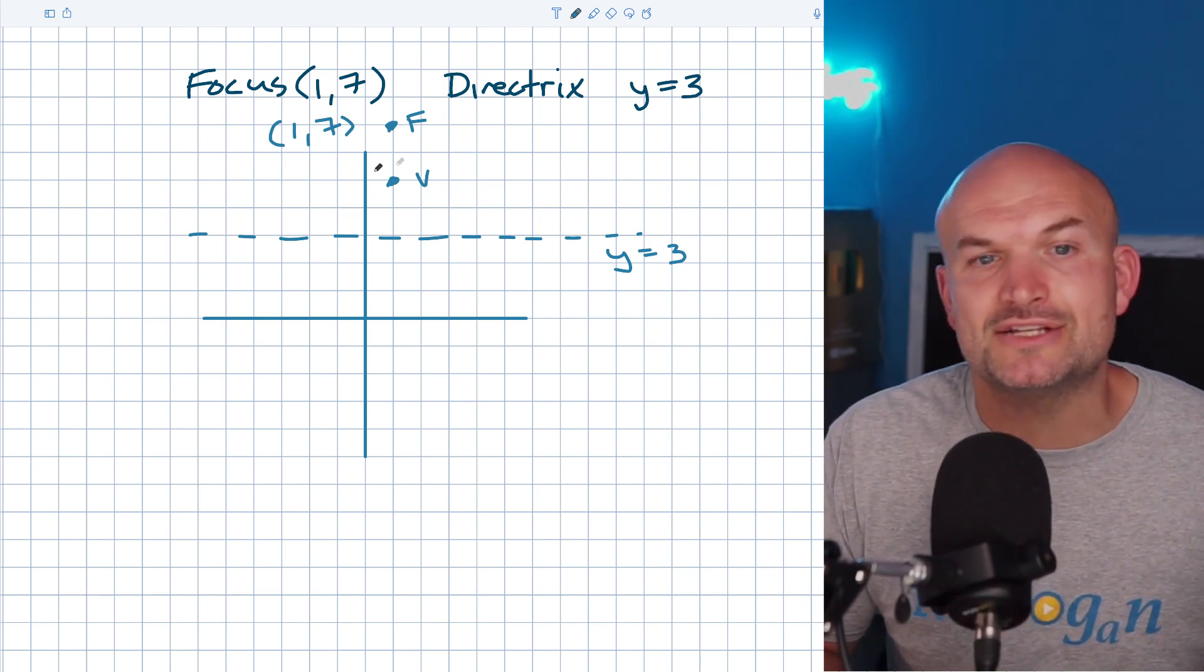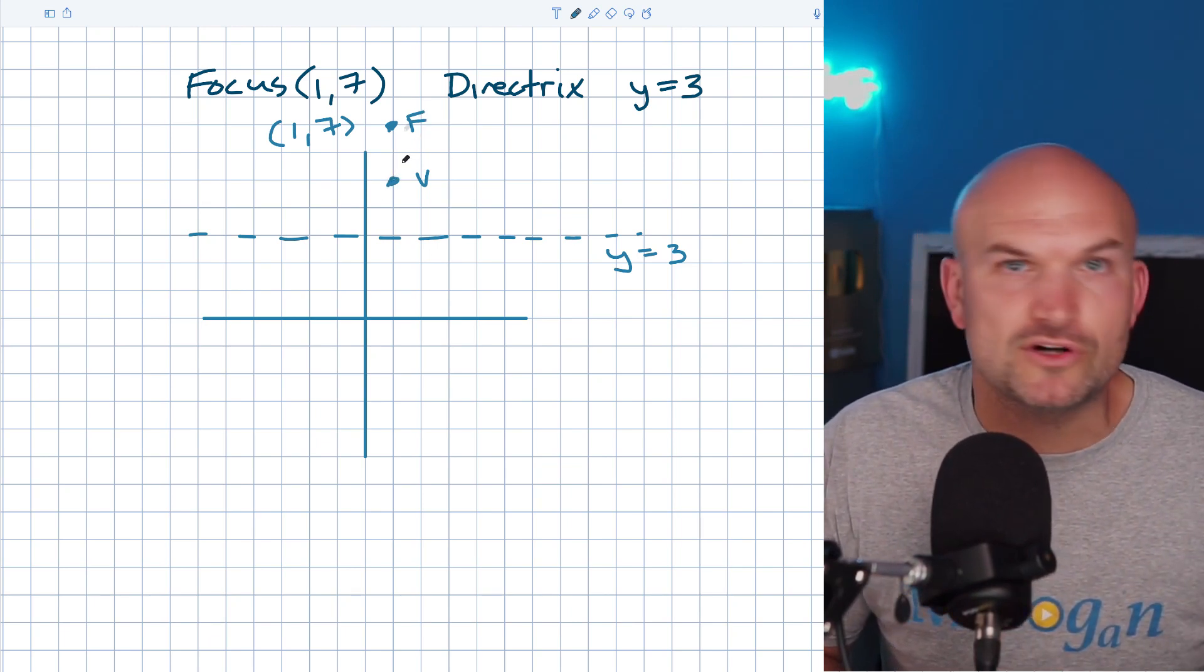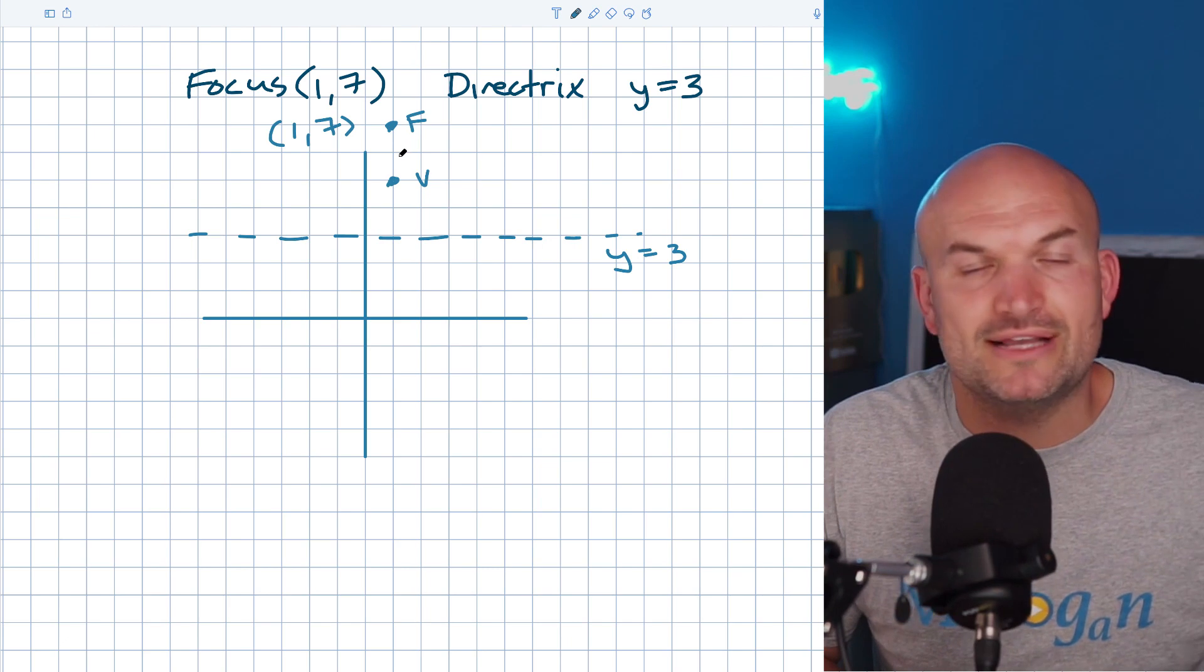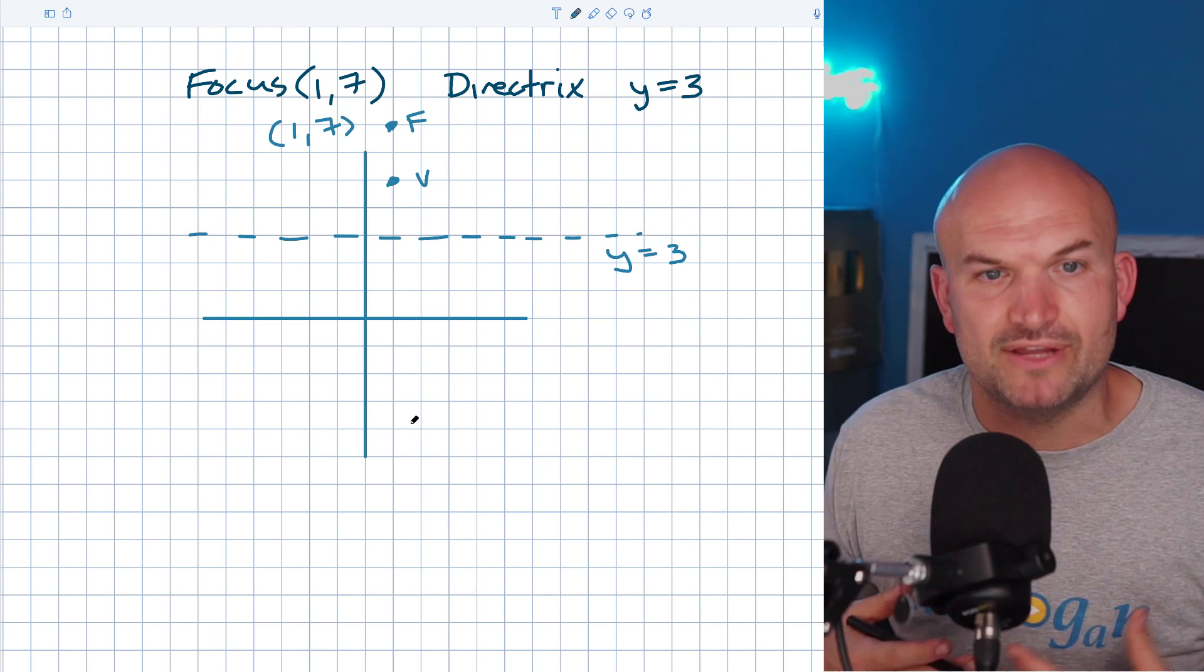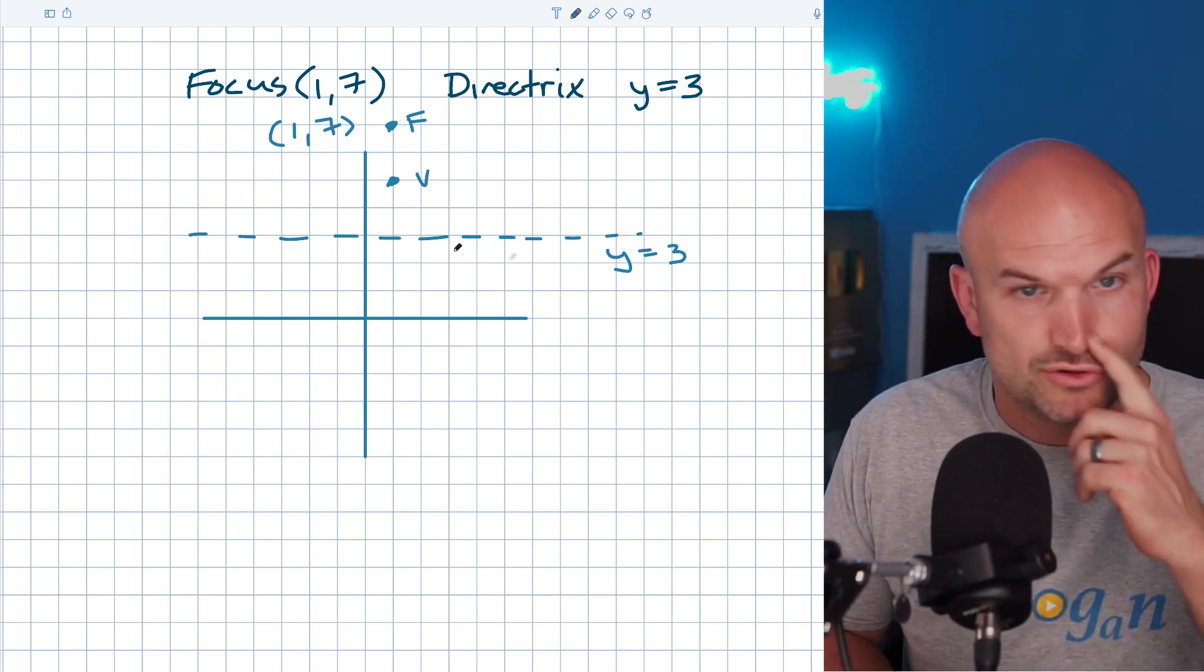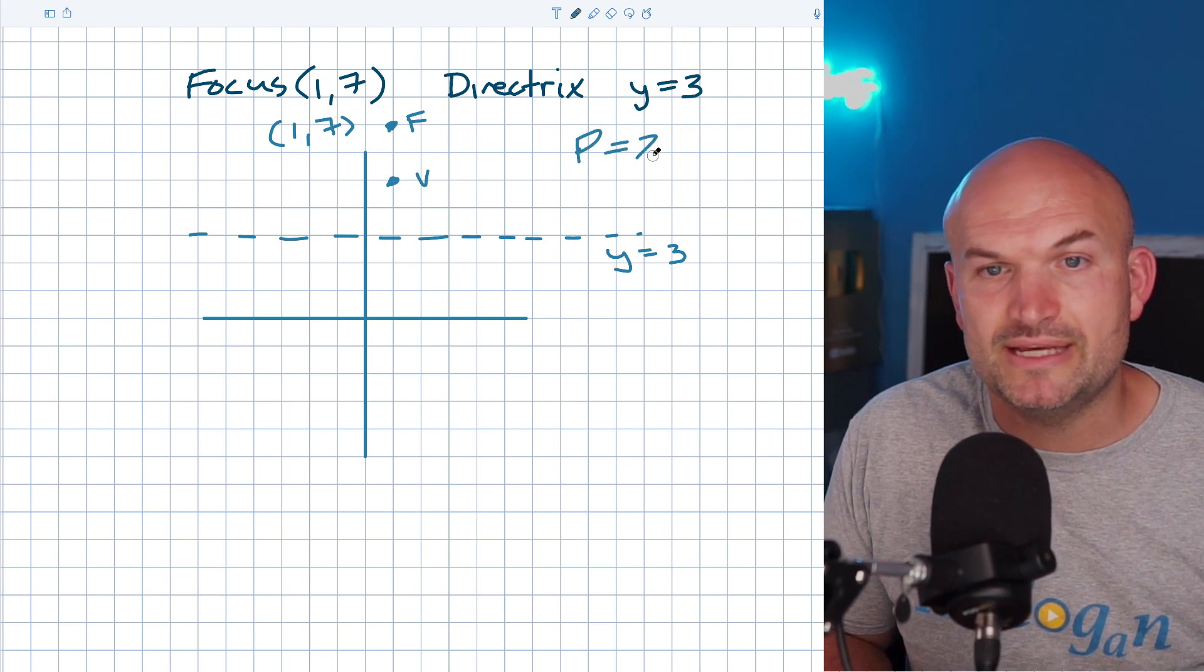Our vertex is in between the focus and directrix - that's what's important and what confuses students. Now we can relate back to what we have. We know the value of p, which is going to be 2 in this case because we're going up. So p = 2.